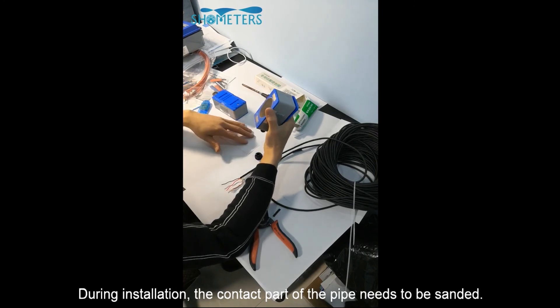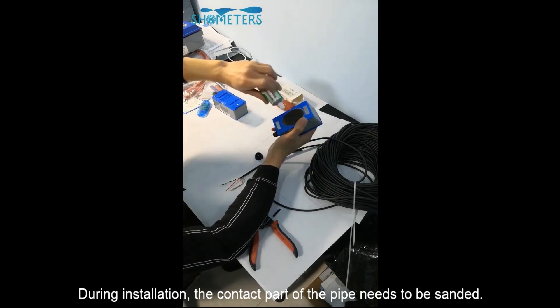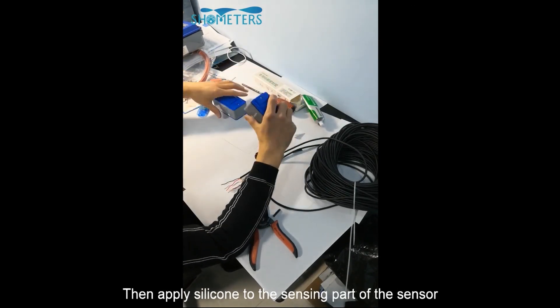During installation, the contact part of the pipe needs to be sanded. Then apply silicone to the sensing part of the sensor.